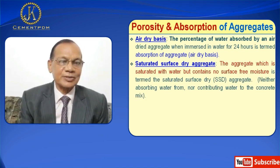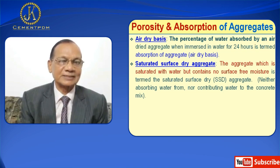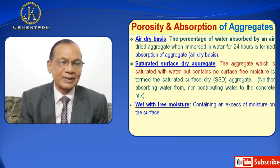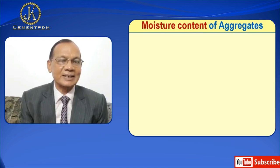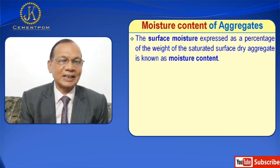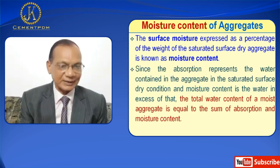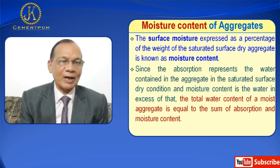Saturated surface dry aggregate: the aggregate which is saturated with water but contains no surface free moisture is termed saturated surface dry, that is SSD aggregate, neither absorbing water from nor contributing water to the concrete. Then wet with free moisture: containing an excess of moisture on the surface. The knowledge of the absorption of an aggregate is important for concrete mix design. Moisture content: the surface moisture expressed as a percentage of the weight of the saturated surface dry aggregate is known as moisture content. Since the absorption represents the water content in the aggregate in the saturated surface dry condition, and moisture content is the water in excess of that.